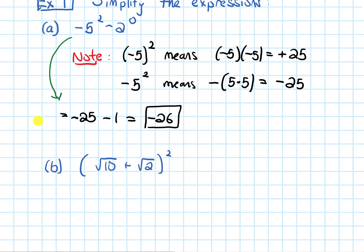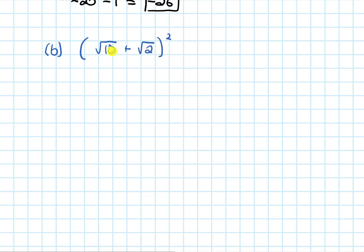So let's look at part B next. I have square root of 10 plus square root of 2, that whole thing being squared. So let's first talk about an incorrect solution to this.